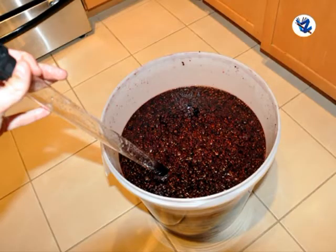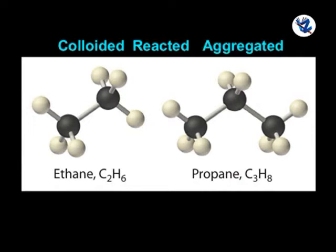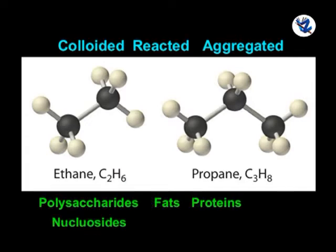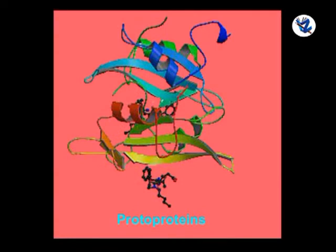The hot dilute soup was sterile and oxygen free. Simple organic substances came together in increasing numbers; they collided, reacted and aggregated, forming new complex molecules such as polysaccharides, fats, proteins, nucleosides and nucleotides. The protein molecules came into existence by polymerization of amino acids. These are called protoproteins. Due to their enzymatic nature, these proteins accelerated the rate of other chemical reactions.